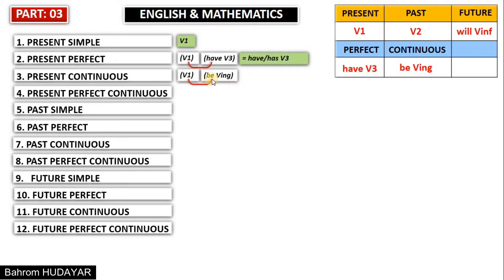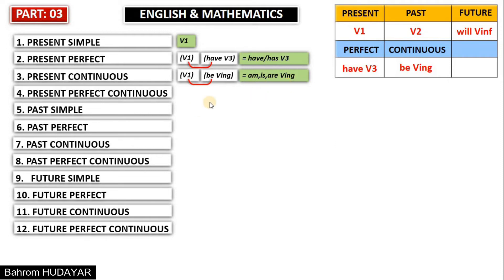The first form of be is am/is/are — verb one. You should multiply verb one with be. What is the first form of be? It is am/is/are, so it is kind of an abbreviation: be = am/is/are. The result is am/is/are + verb-ing. The main formula of present continuous is am/is/are + verb-ing and cannot be changed. We're going to use this formula whenever we want to use present continuous.